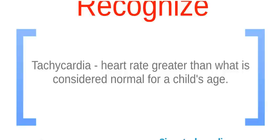Tachycardia occurs when the heart rate is greater than what is considered normal for a child's age, and it can be life-threatening. The ventricles are unable to fill completely, so cardiac output is lowered. The coronary arteries receive less blood, so supply to the heart is decreased.